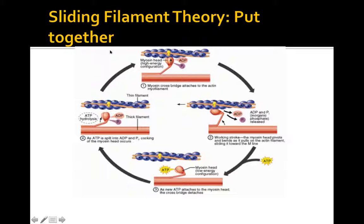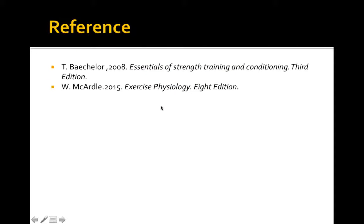To summarize: calcium binds to troponin, tropomyosin uncovers the actin active sites, and ATP binds to the myosin head enabling the power stroke. ADP is released; then a new ATP molecule binds so the myosin head can detach and repeat the entire process. This sliding filament theory describes the actual contraction of the muscle.